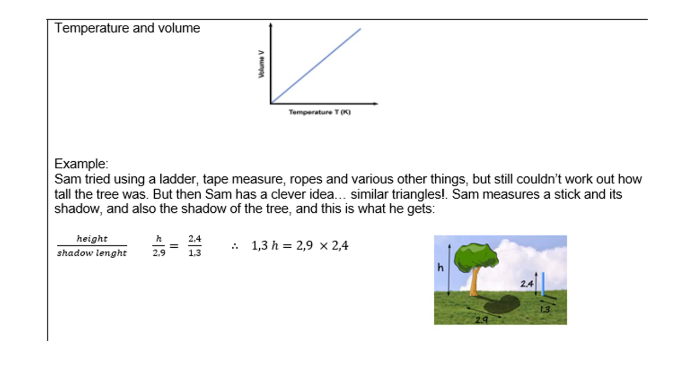So remember, H is the height, or the tallness of the tree, that was unknown, but he could measure the length of the shadow, and also the stick. He could measure the height and the length. So if you use direct proportion, H over 2.9 equals 2.4 over 1.3, then you can, by use of cross multiplication, find the height of the tree.